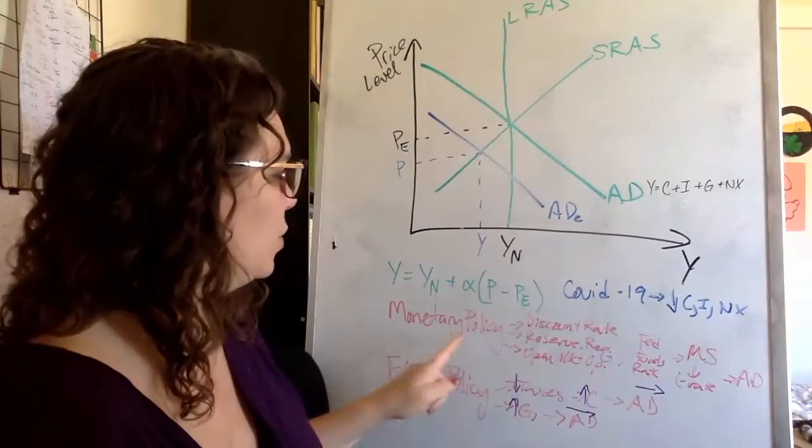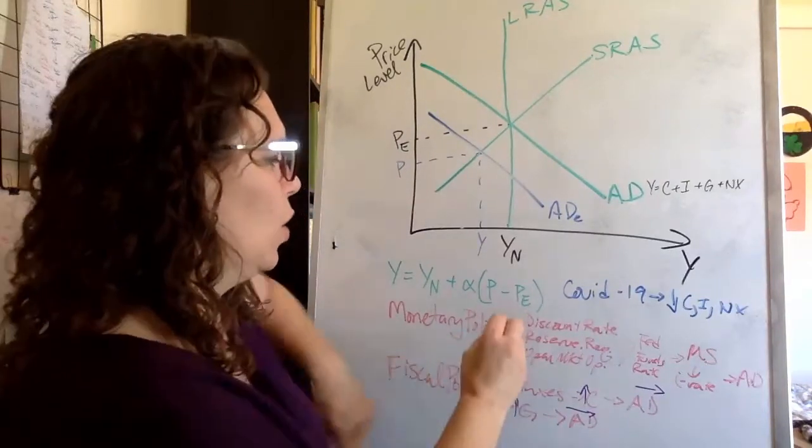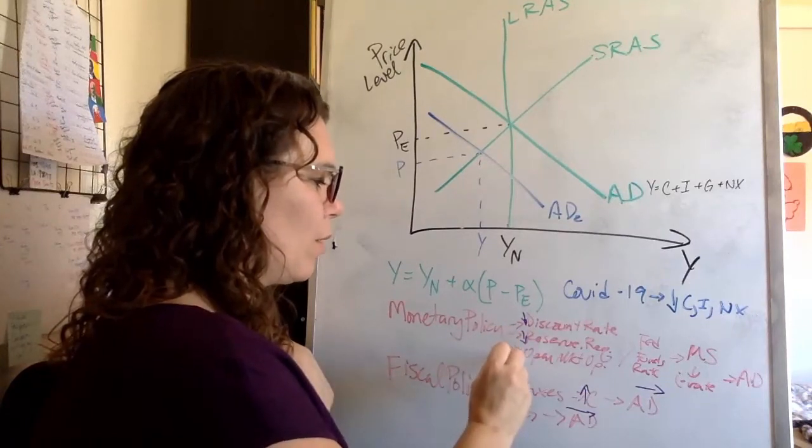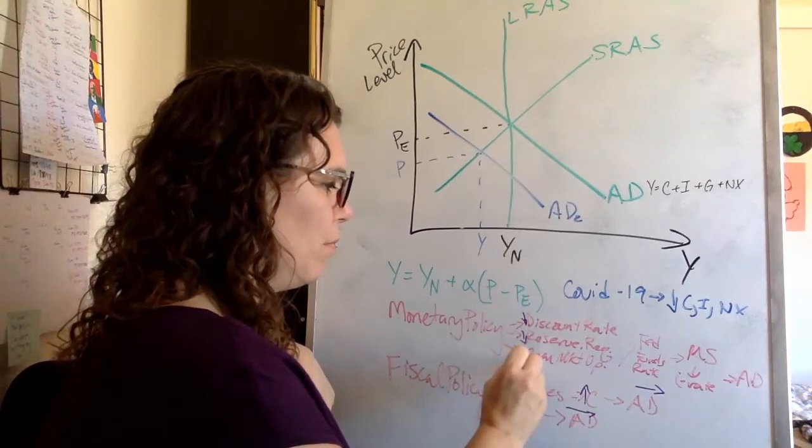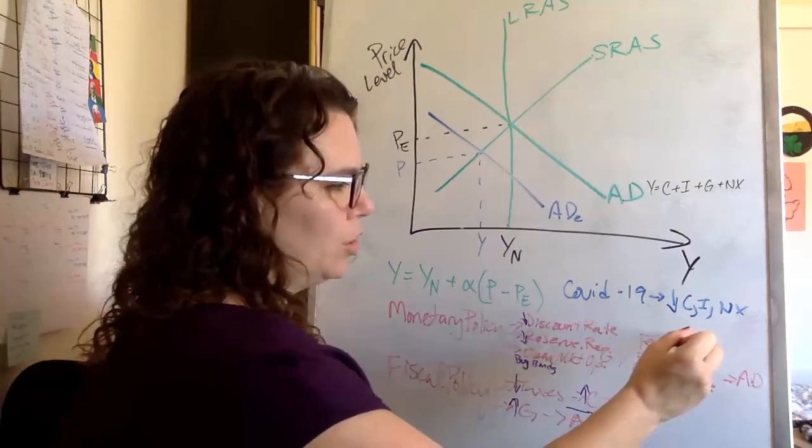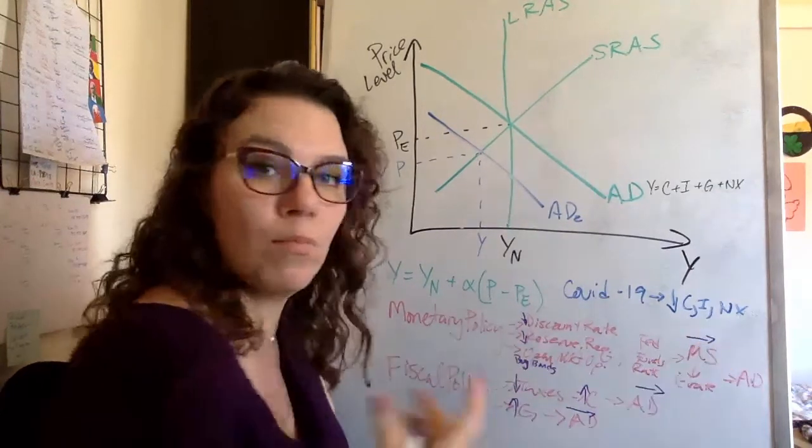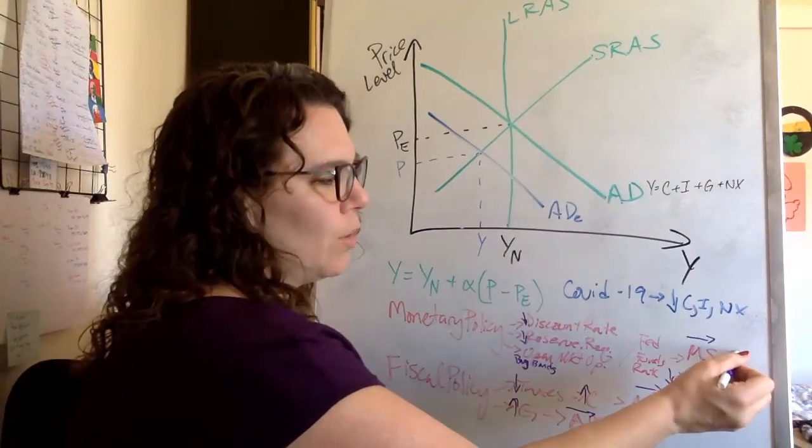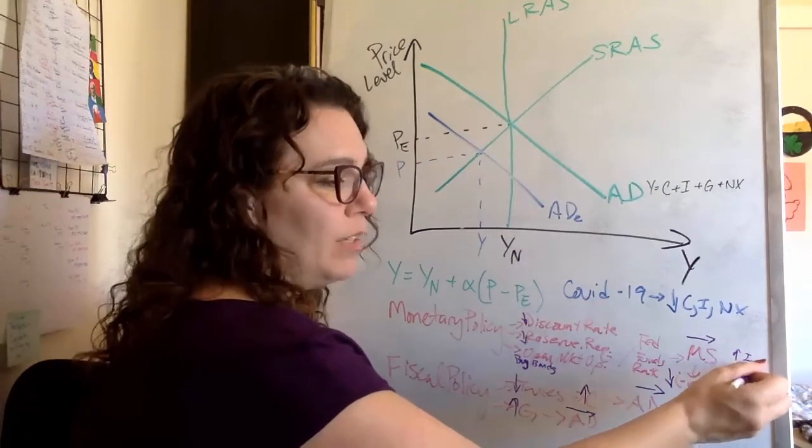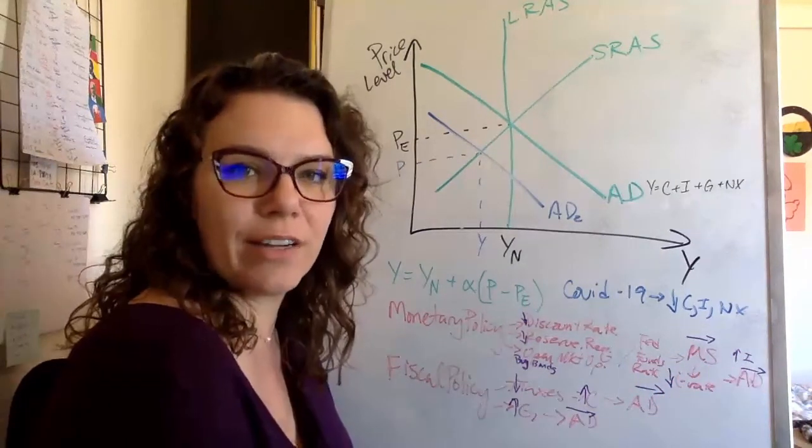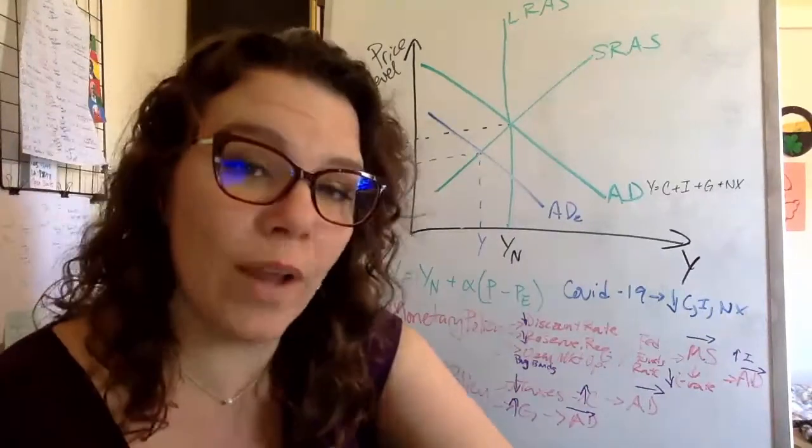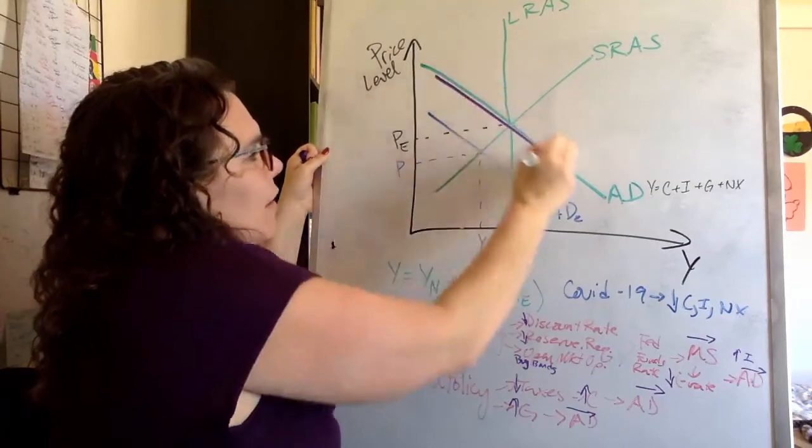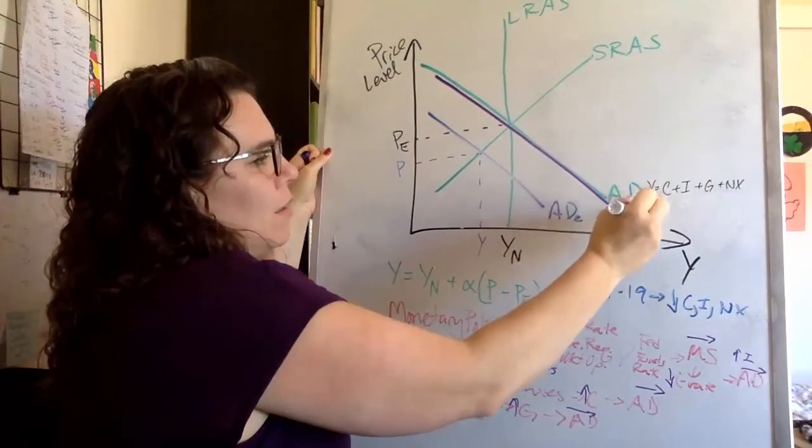If we wanted to engage in monetary policy, we would lower the discount rate, lower the reserve requirement, or buy bonds. And that would shift the money supply out, more money flowing through the economy, it's going to make it cheaper to borrow, which is going to increase investment spending and probably consumption too, and shift aggregate demand out. So those are the different ways we could try to stabilize the economy, get it back to where it was.